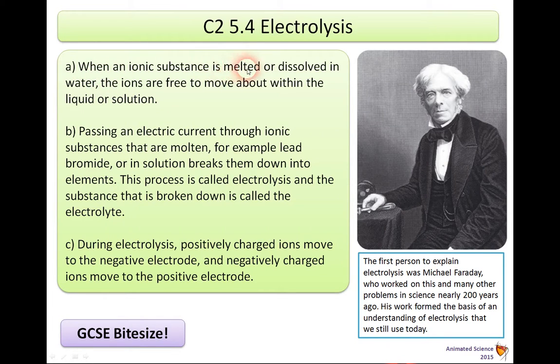When a substance is melted or molten or dissolved in water, the ions are free to move about within the liquid or solution. Passing electric current through ionic substances that are molten, for example lead bromide, or in solution, breaks them down into elements. This process is called electrolysis and the substance that is broken down is called the electrolyte.